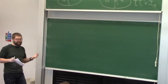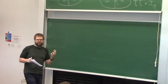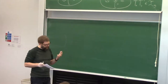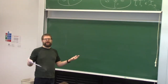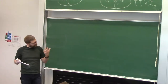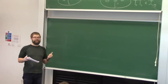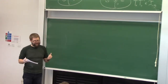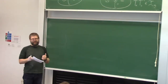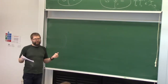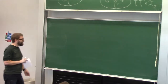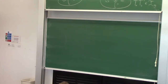What happens when you pass to an infinite index subgroup? Well, typically all hell breaks loose. Think about a free group: a free group of rank two has a normal subgroup that's infinitely generated — a huge, infinitely generated group. So we might expect that nothing good is true about the Torelli group.